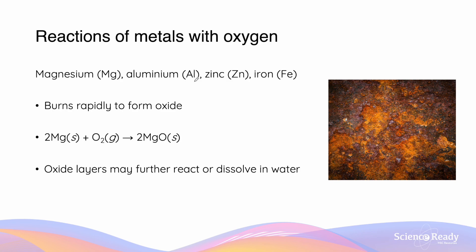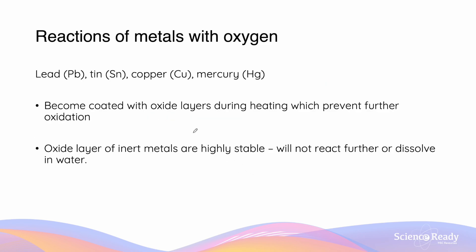Metals such as magnesium, aluminium, zinc, and iron will burn to form an oxide. However, these oxide layers are less reactive, just as they were when reacting with water and dilute acid, though they may react further by burning or dissolving in water. Inert metals such as lead, tin, copper, and mercury will become coated with oxide layers during heating. Because these oxide layers are highly stable, they prevent further oxidation by blocking oxygen from penetrating deeper layers of the metal.